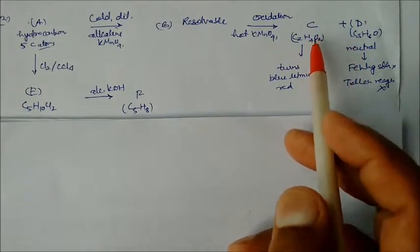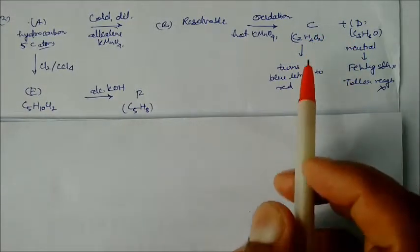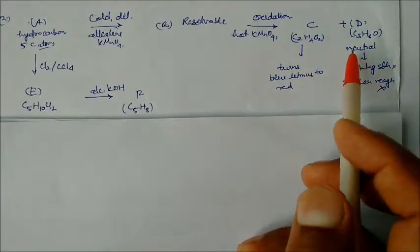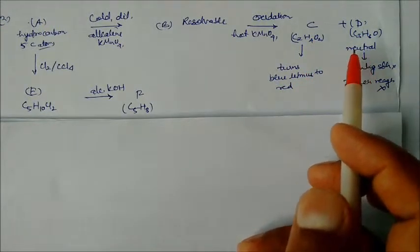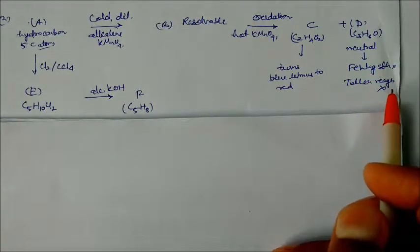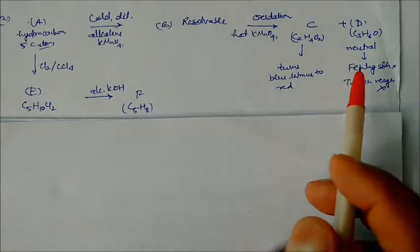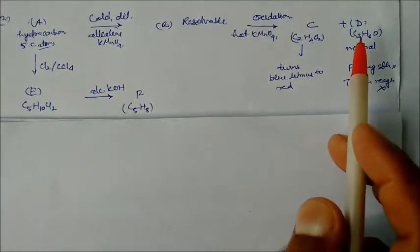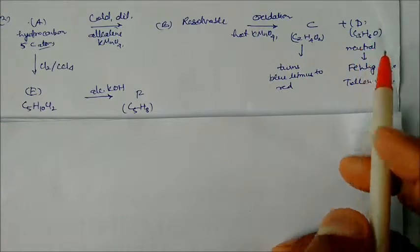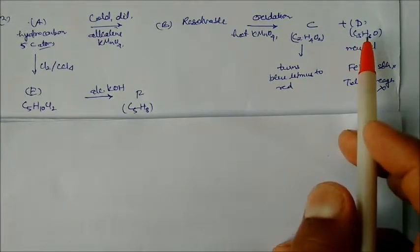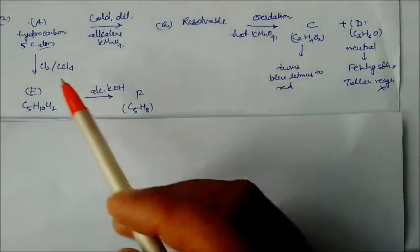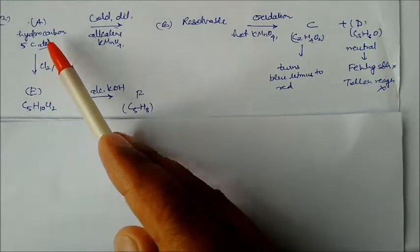This compound on oxidation in presence of hot KMnO4 solution gives products C and D. C is C2H4O2, which turns blue litmus to red — so C is an acid. D is a neutral compound that does not react with Fehling's solution or Tollens reagent, so D must be a ketone, not an aldehyde.